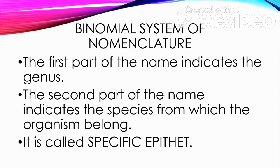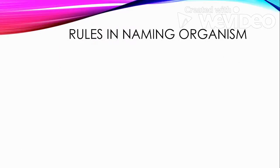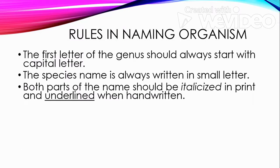Let's proceed with the rules in naming organisms. The first letter of the genus should always start with a capital letter. The species name is always written in small letters, and both parts of the name should be italicized in print and underlined when handwritten.